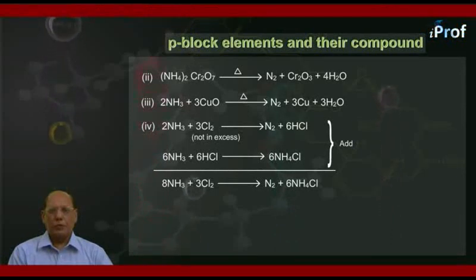The HCl thus produced reacts with ammonia, that is 6NH3 plus 6HCl gives 6NH4Cl. If we add the two equations...